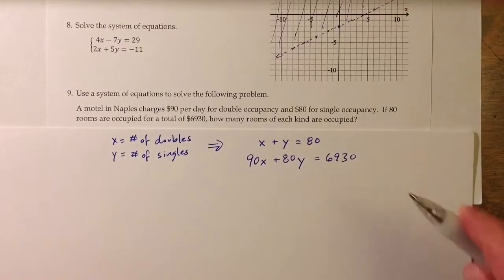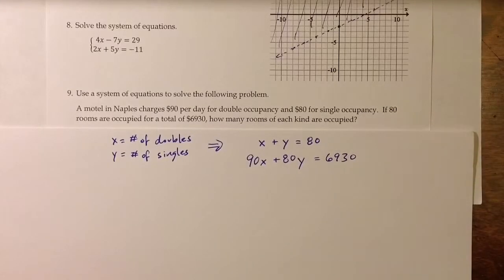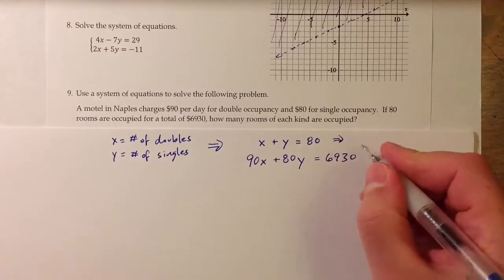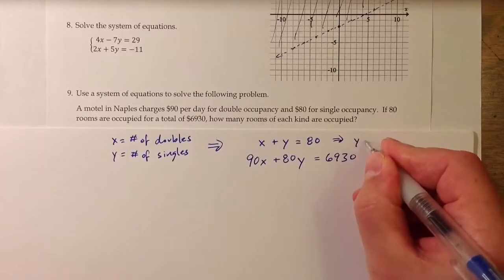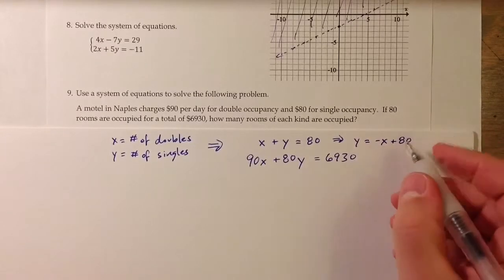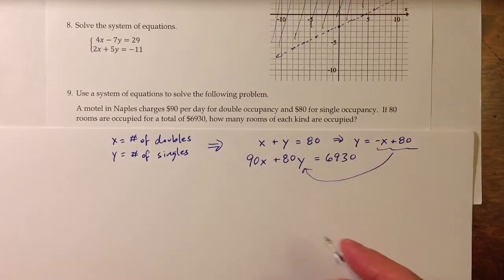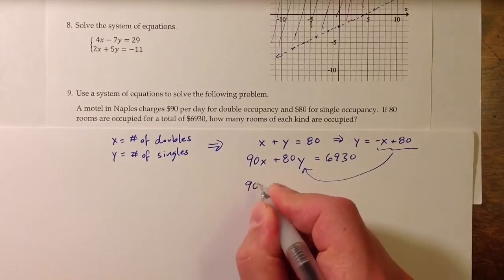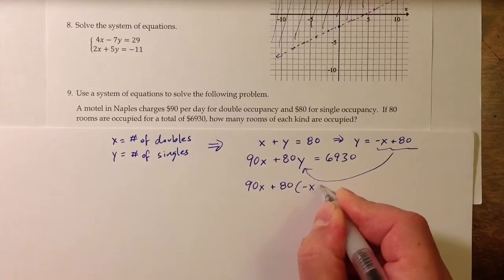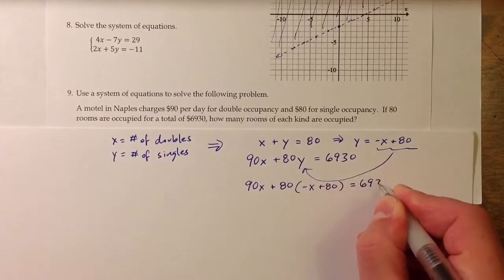So in this case, we could pretty easily solve for y, so we could use the substitution method. So let me do that. So solving the first equation for x or y, solving for y would give us y equals negative x plus 80. And now I can substitute that expression in for y in the second expression. So I get 90x plus 80 times negative x plus 80 equals 6930.